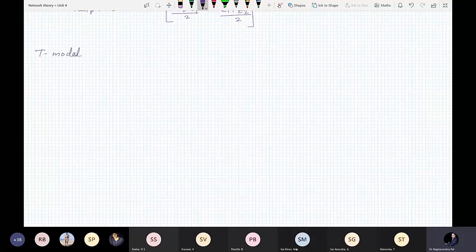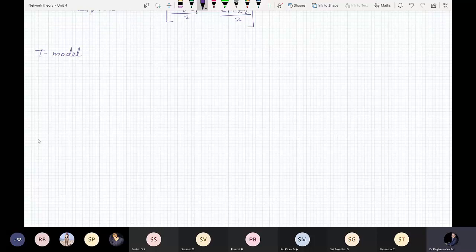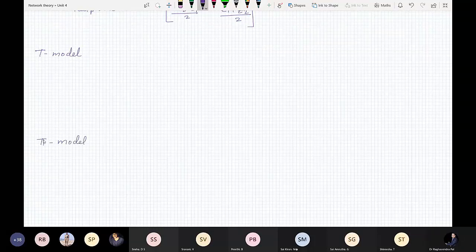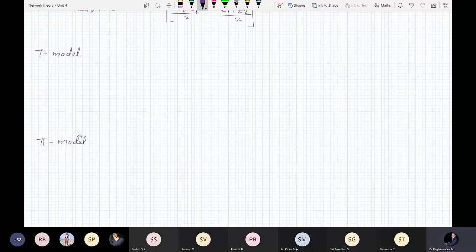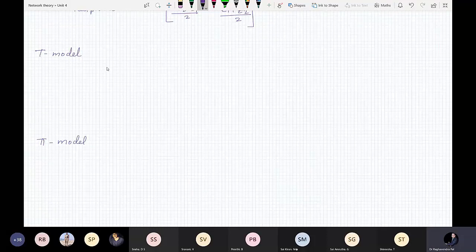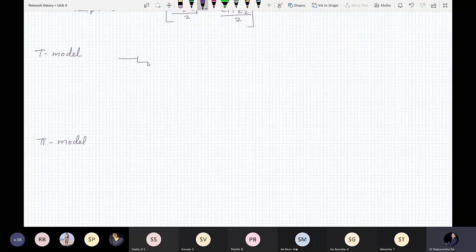Two types of models are there: T-model and Pi-model. In T-model, what type of network is there? Why it is called T-model? Because it looks like T.